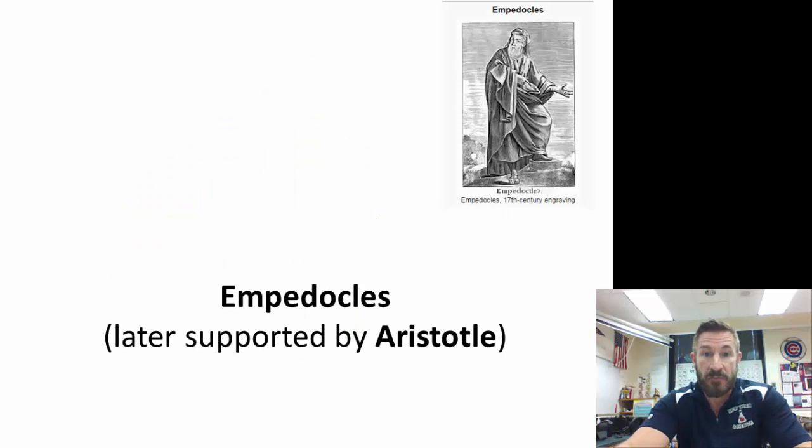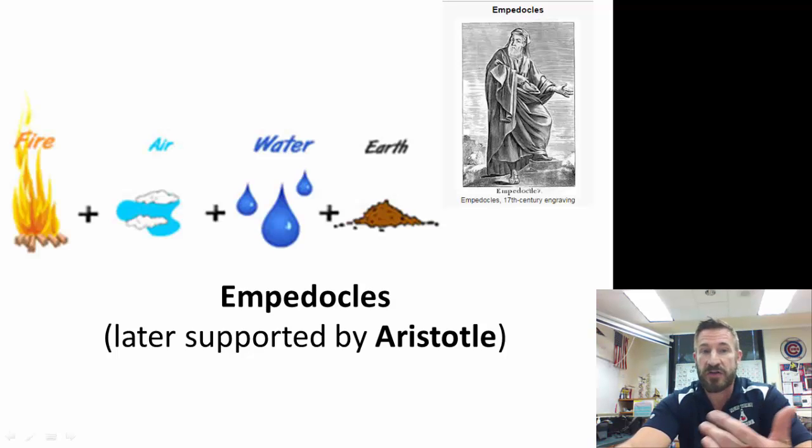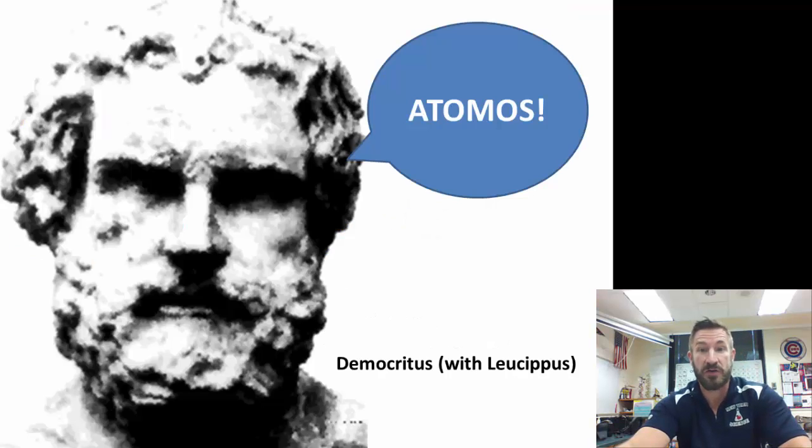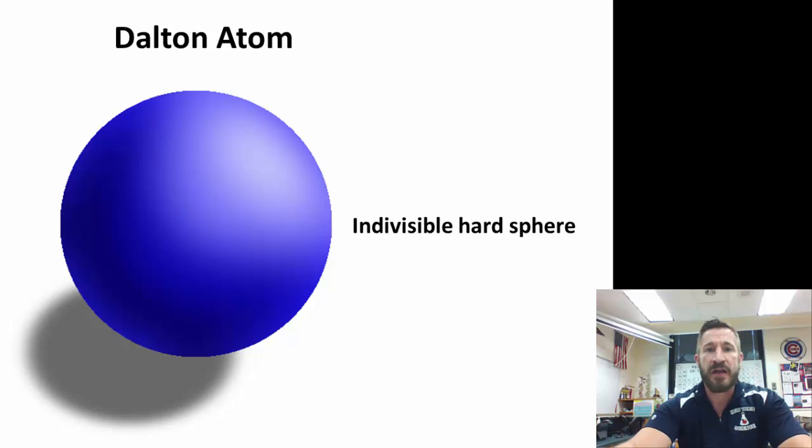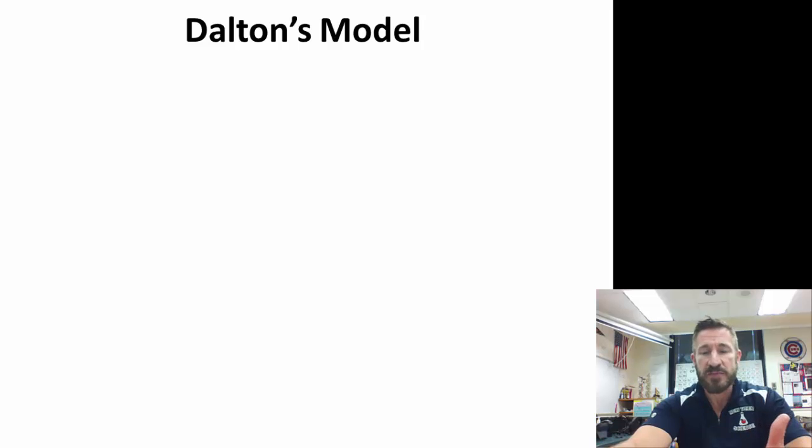Empedocles was one of the first people to look at the atom, think there was an atom. He was later supported by Aristotle. They talked about fire, air, water, and earth, but that's not where we're going to start. We're going to start with Democritus. He said there were atoms, or as he termed them, atomos. Then there was John Dalton. Dalton said yes, there are atoms. He said there's this invisible, hard sphere and he made postulates about the atom.